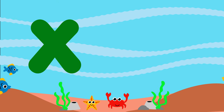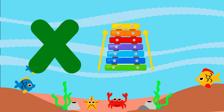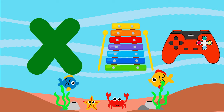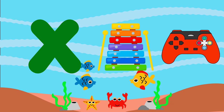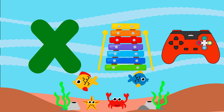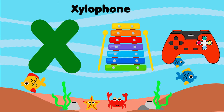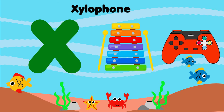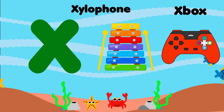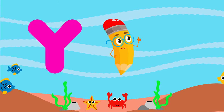X is for xylophone. X, x, xylophone. X is for box. X, x, box. X is for x, x, xylophone. X is for x, x, box.